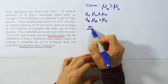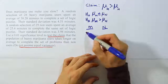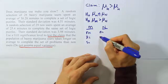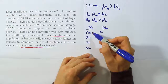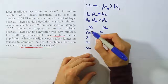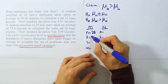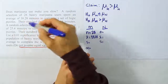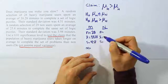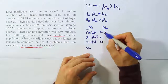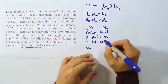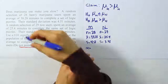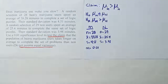Now let's record the data using labels M for marijuana users and N for non-users, with n, x̄, and s for each group. For the marijuana group: n = 28, x̄ = 38.28 minutes, s = 4.51 minutes. For the non-user group: n = 29, x̄ = 25.4 minutes, s = 3.98 minutes. The significance level alpha is 0.01. Now let's plug that data into our test stat formula.